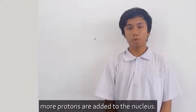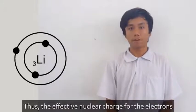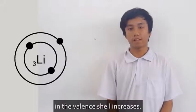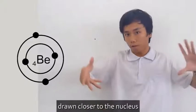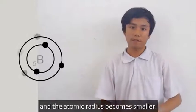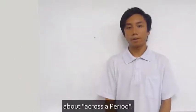they are relatively ineffective at shielding each other and the screening effect remains approximately constant. But at the same time, more protons are added to the nucleus. Thus, the effective nuclear charge for the electrons in the valence shell increases. This causes the electrons from the valence shell drawn closer to the nucleus and the atomic radius becomes smaller. But this is only applied when we are talking about across a period.